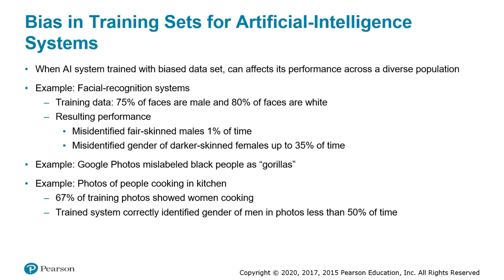There is also bias in training sets for artificial intelligence systems. When a dataset used to train an AI system is biased, the performance of the system across a diverse population can vary dramatically. In a dataset widely used to train facial recognition systems, about 75% of the faces are male and more than 80% are white. A researcher at MIT's Media Lab found that the facial recognition systems of Microsoft, IBM, and Face++ misidentified the gender of fair-skinned males only 1% of the time, while misidentifying the gender of darker-skinned females up to 35% of the time.